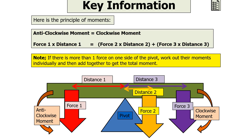This indicates that if there is more than one force acting on one side of the pivot, you work out each moment individually and then add them together to get the total moment on that side of the pivot.